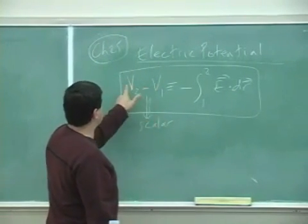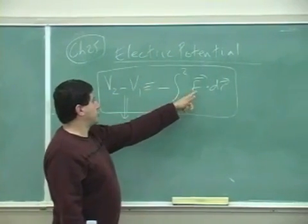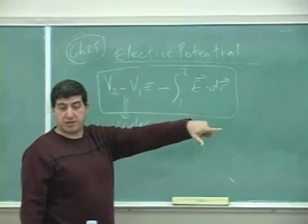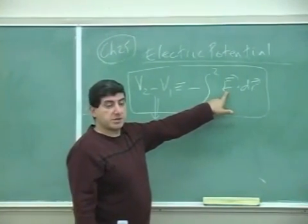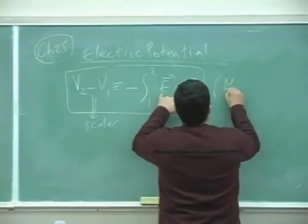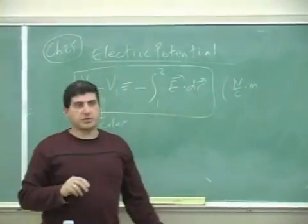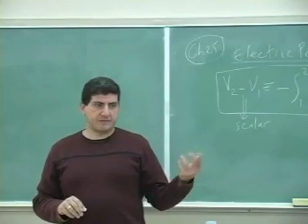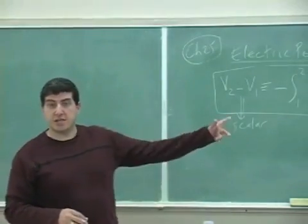What this is telling you is the voltage difference between two points in space is equal to the straight line integral of the electric field along that space. The units of electric potential are the units of electric field times meters — so Newton per Coulomb times meter. That would be the units of electric potential. But since it is used so much, we give it a different name, named after the scientist Volta, and abbreviated as a volt.